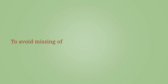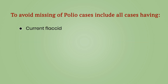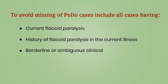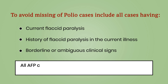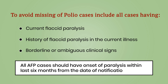To avoid missing polio cases, include all cases having current flaccid paralysis, history of flaccid paralysis in the current illness, and borderline or ambiguous clinical signs. All AFP cases should have onset of paralysis within the last 6 months from the date of notification.